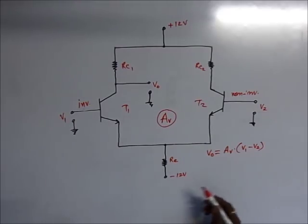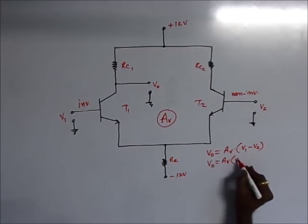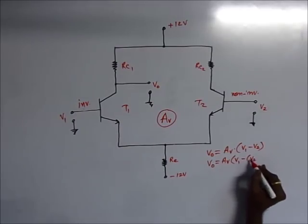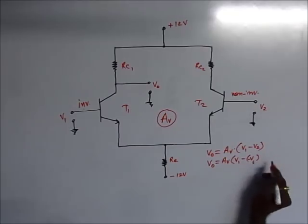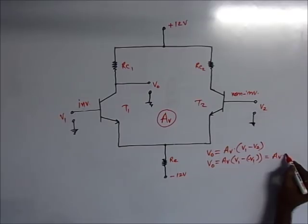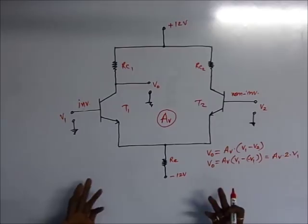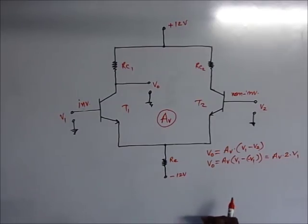Now if V1 and V2 are equal in magnitude but opposite in polarities, then VO = AV × (V1 − (−V1)), which gives VO = AV × 2V1. So this indicates that when the two inputs are equal in magnitude but opposite in polarities, the gain will be simply doubled.